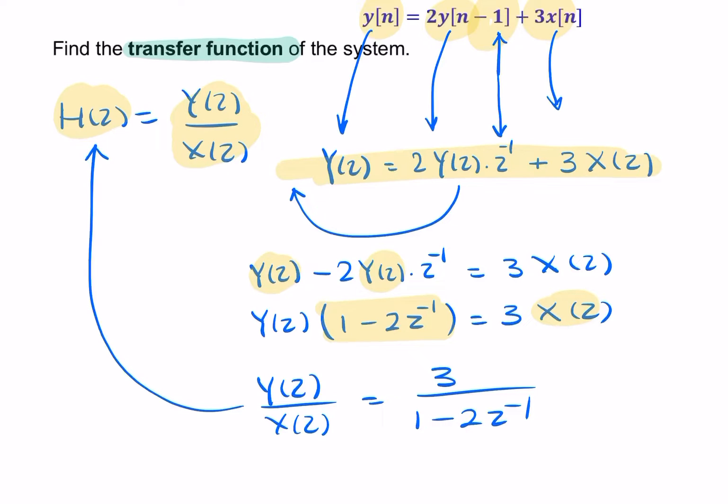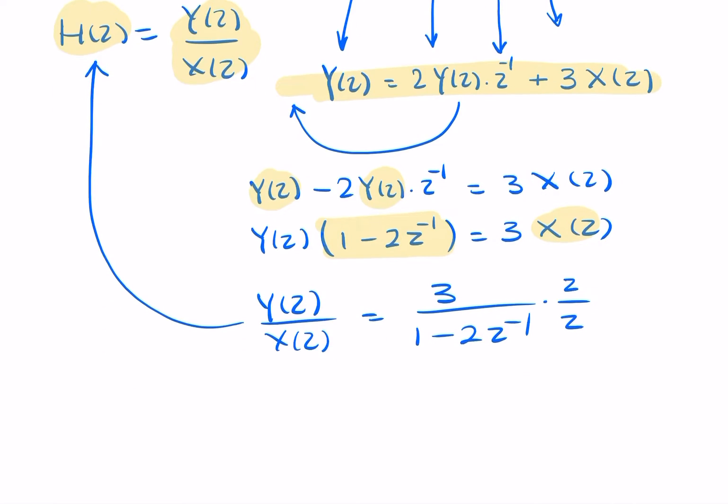Now I could simplify this to get rid of the negative power there. So I could multiply by z over z. And that would give me 3z over z minus 2, which is a slightly nicer-looking version of the transfer function.